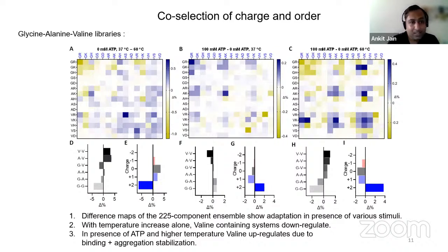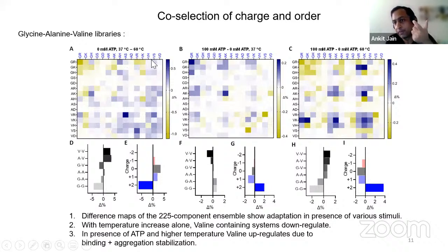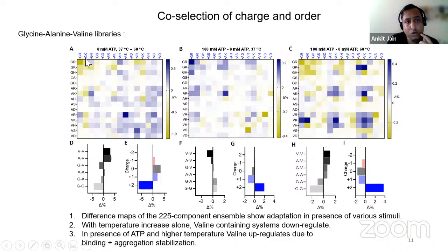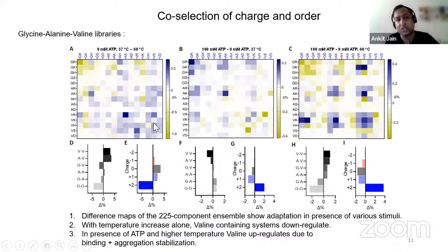Then finally, what we did was we mixed all 15 dipeptides together. These 15 dipeptides give you 225 tetrapeptides, and all 225 are mapped in these heat maps. The x-axis is essentially the first half of the tetrapeptide, the y-axis is the second half. They are grouped as glycine first, alanine second, then valine, and individual glycine, alanine, valine are then ordered by charge: lysine, arginine, histidine, serine, and aspartic acid. So if you see amplification in the glycine-rich region, you can also see if it's positive or negative charge; the valine-rich region allows charge differentiation among them. In this system, different kinds of hydrophobicity and charge are present, and there is a co-selection happening with charge and order.